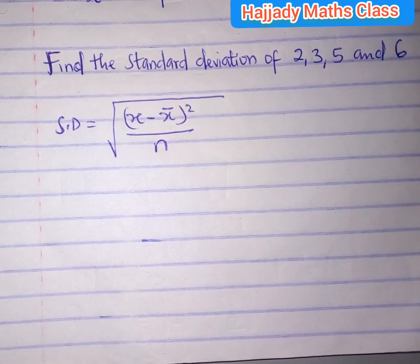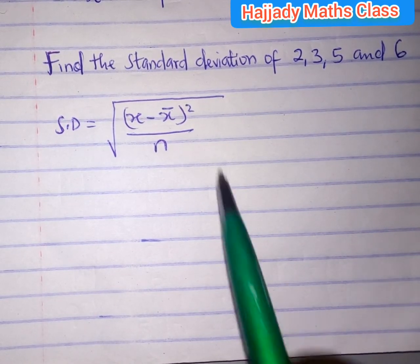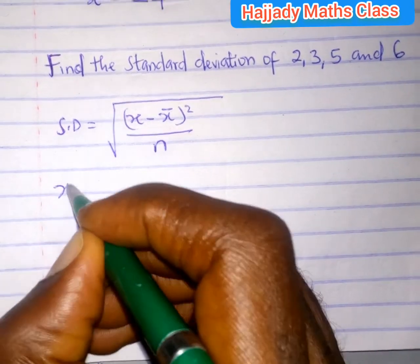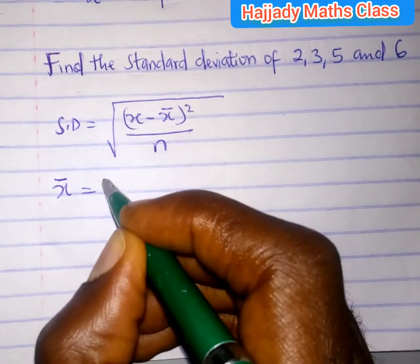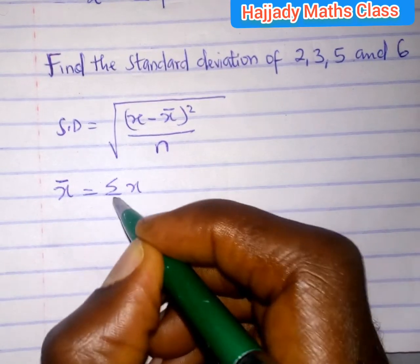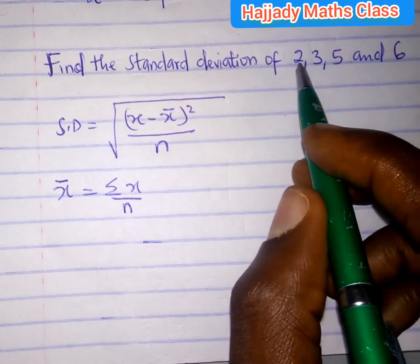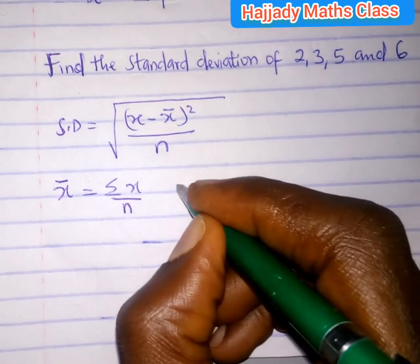Now, this is an example of ungrouped data. The x bar here means the mean. To calculate the mean, it's the sum of all the variables over n. How many variables do we have here? We have 1, 2, 3, 4. That is, our n is 4.